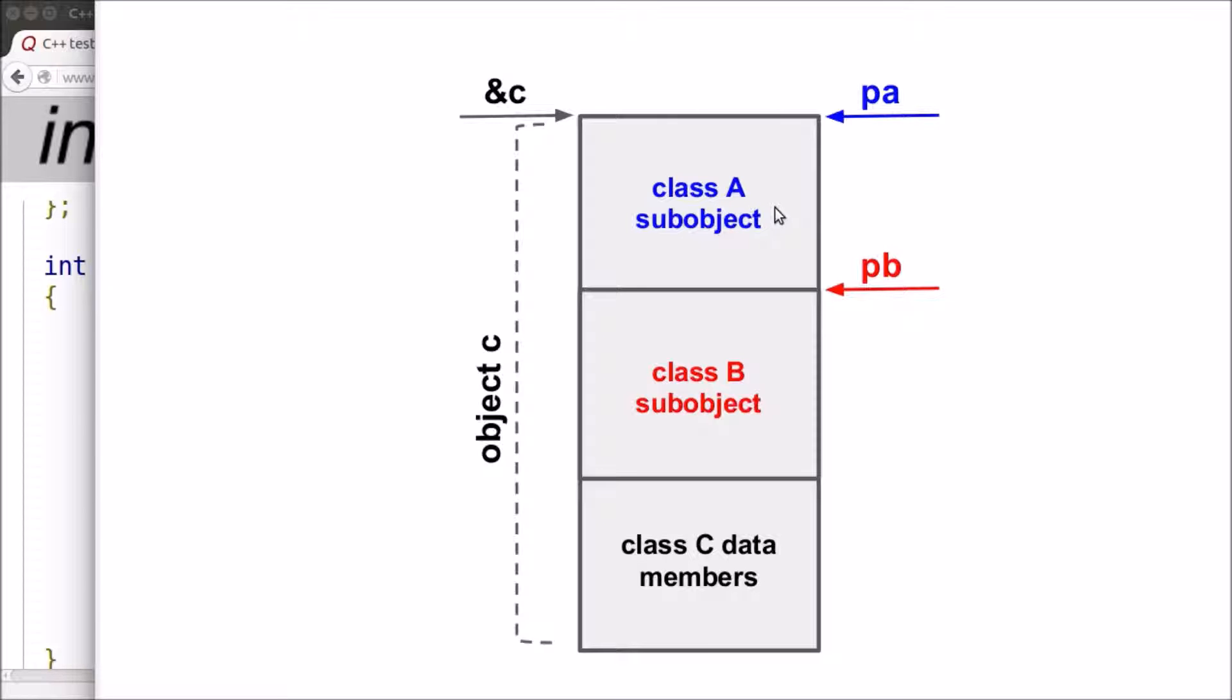When derived class pointer is converted to a base class pointer, the resulted pointer points to the address of the sub-object of that base class. The address of sub-object of Class A is the same as the address of object C since it is located at the beginning of object C. The address of the sub-object of Class B is different from the address of object C since it is not the first sub-object.